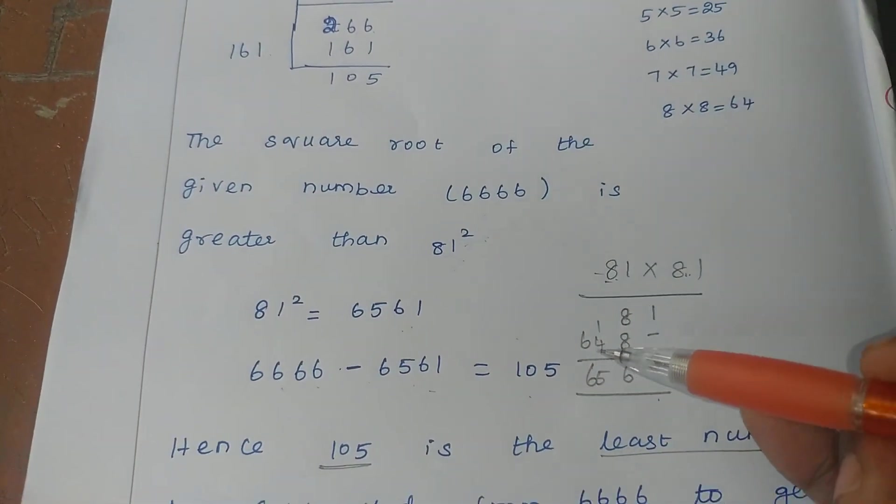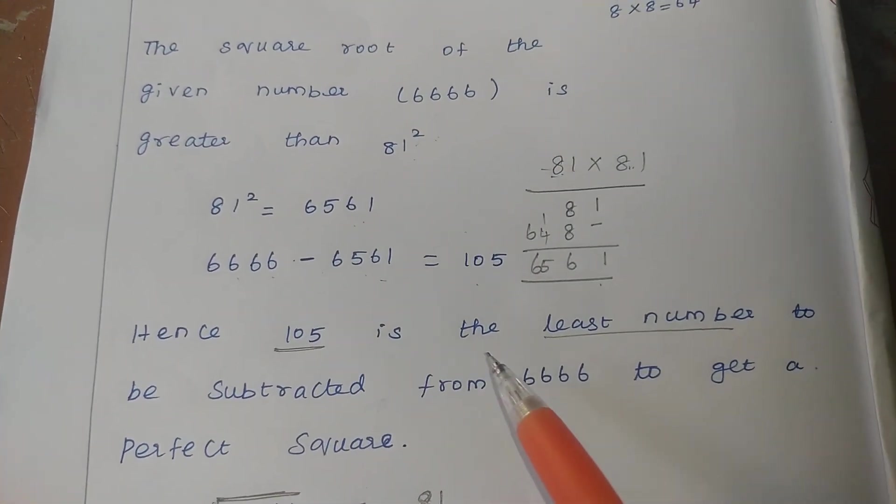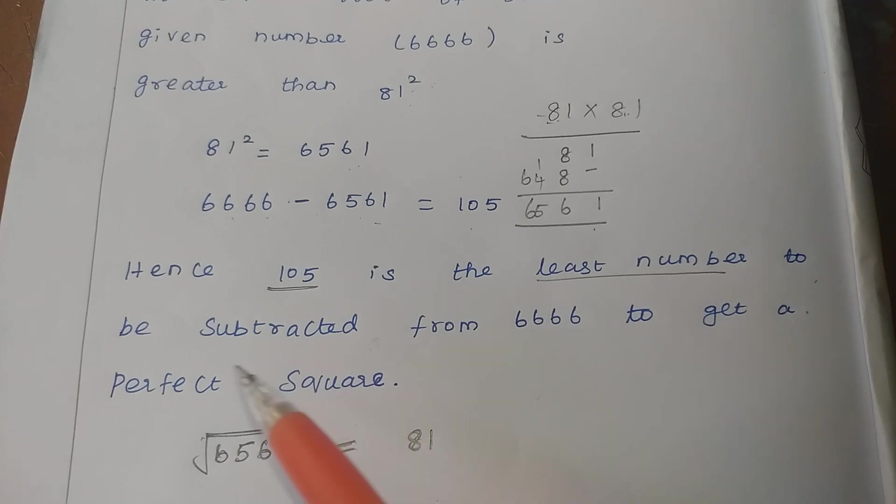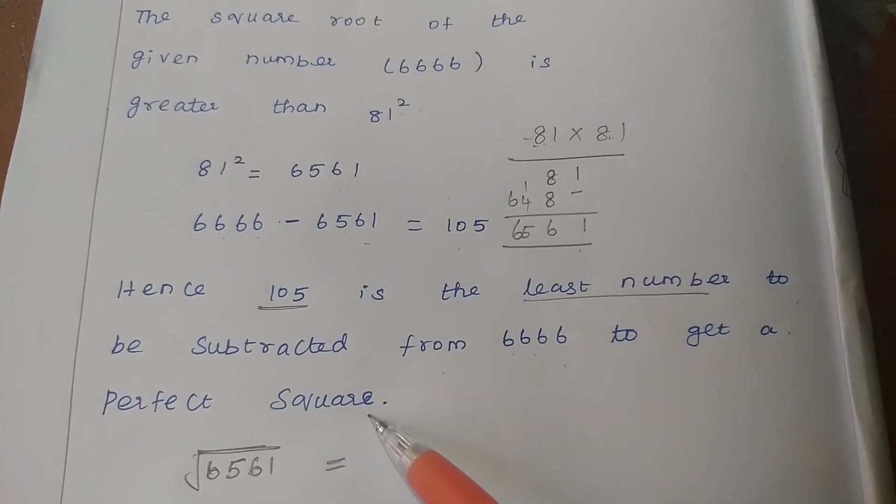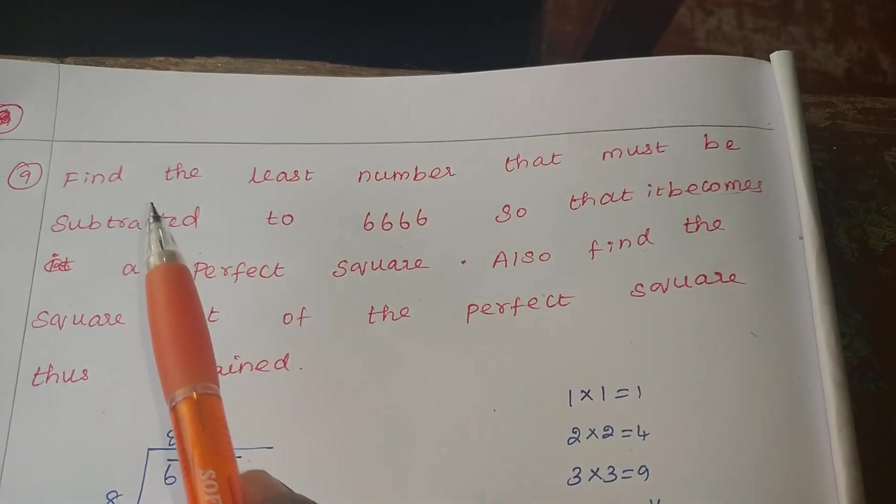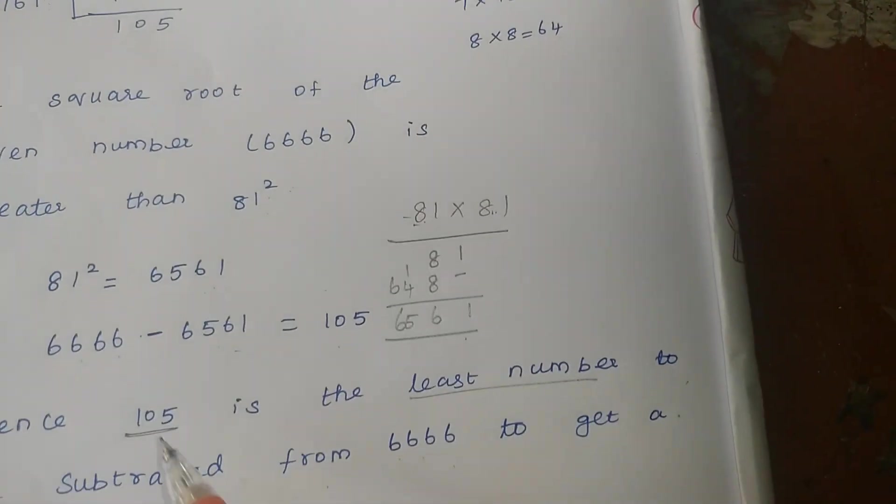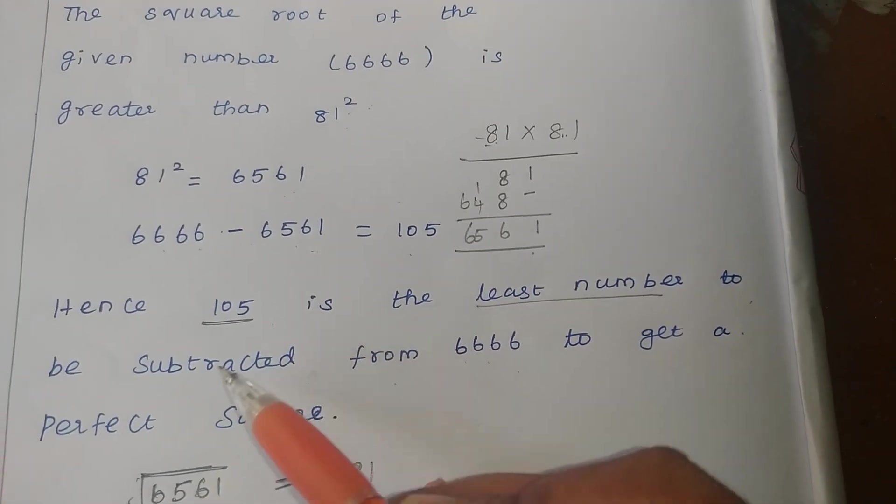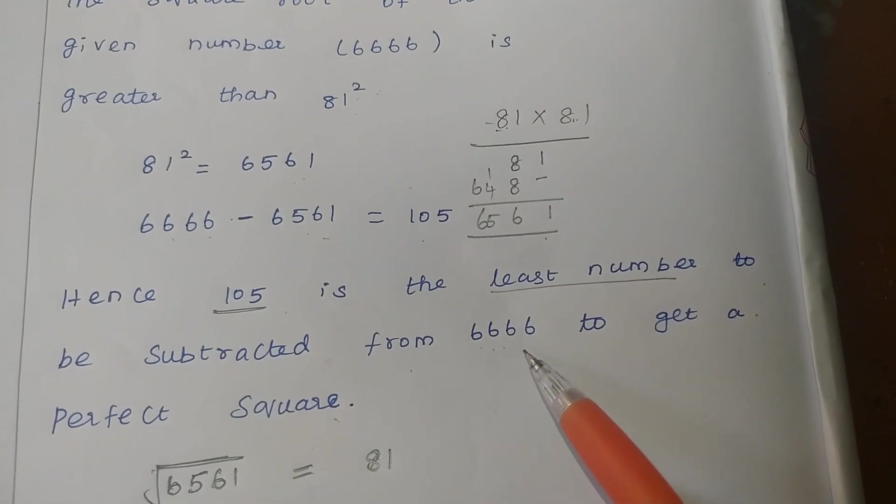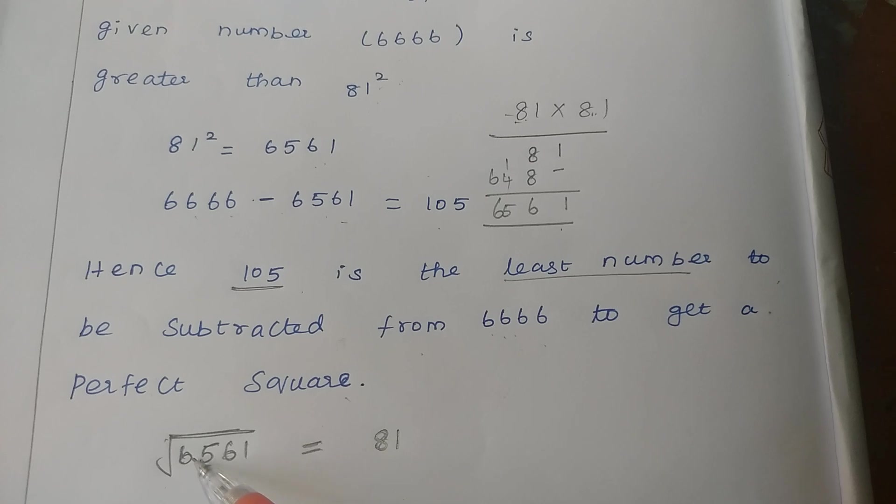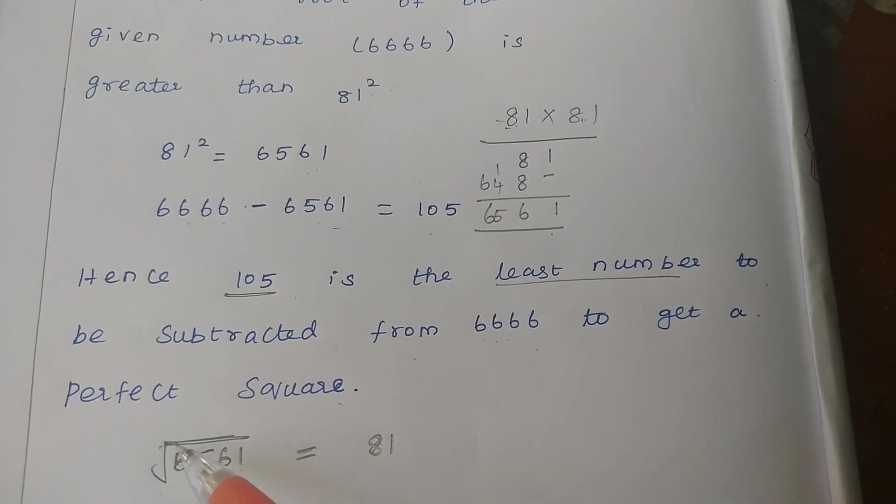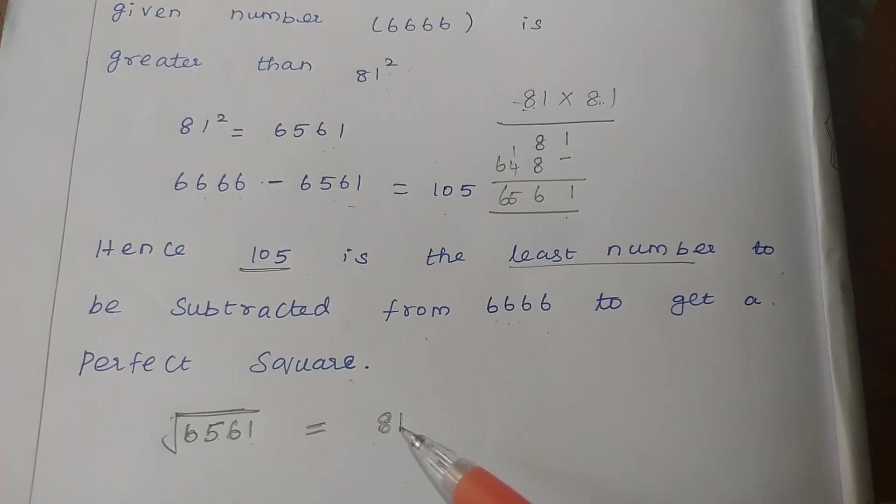Now we will check the answer is correct. So hence, the 105 is the least number to be subtracted from 6666 to get the perfect square. So this is only the asking. What is the least number? So the least number is what? 105. That only as subtracting, you are getting 6561. So the perfect square is 6561. The root of 6561 is what? 81.